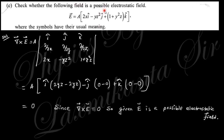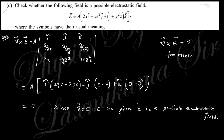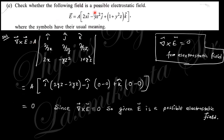The next question says: check whether the following field is a possible electrostatic field. For an electrostatic field, curl of E must equal 0. Taking the curl of the given electric field E = (2xy − z²)î + y²z ĵ + ... using the determinant form: the î component gives ∂(y²z)/∂y − ∂(...)/∂z = 2yz − 2yz = 0. For ĵ and k̂ components, there are no matching variable dependencies, so those are also 0. Since curl E = 0, E is a possible electrostatic field.